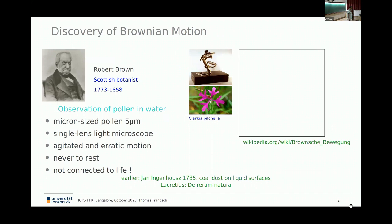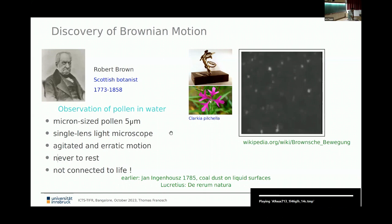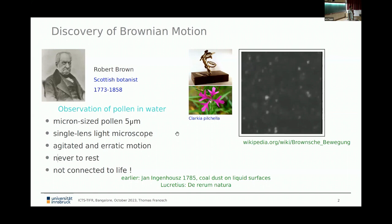Before we start with active particles, let's recall the history of Brownian motion — this is basically just a warm-up. Robert Brown observed pollen in water. He used a single-lens light microscope, which consists only of a lens. He saw this agitated, erratic, never-ending motion of the pollen in water.